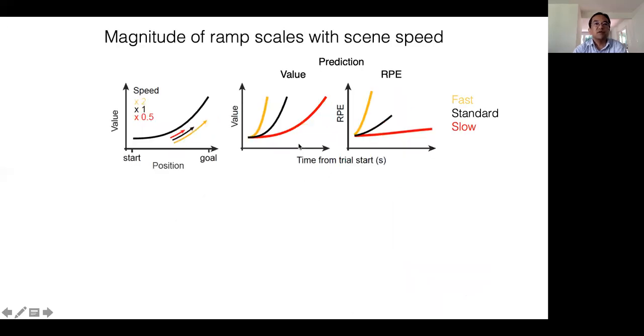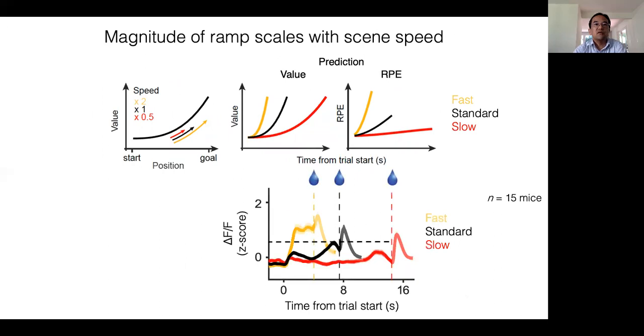We next performed speed manipulations. If the dopamine signal is the temporal derivative of value as predicted from TD errors, then it should be sensitive to the speed of the same movement. Compared to the standard condition, the slow speed resulted in weaker ramps, and faster speed resulted in greater ramps. These results are difficult to explain by the value hypothesis, as it predicts that the value should be the same at the goal location. Instead, these results are consistent with the idea that dopamine activities encode TD error, or the temporal derivative of a spatial value function.